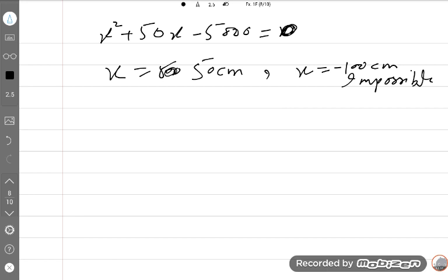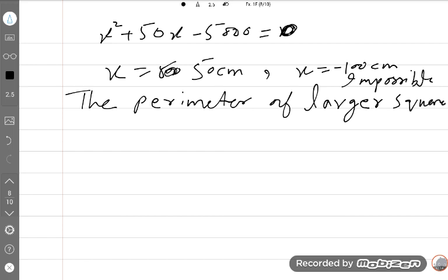So, x is equal to 50. The perimeter of larger square is 200 minus x, 200 minus 50. So, answer is 150 centimeter is required answer.